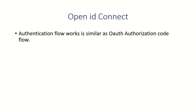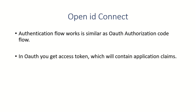In OAuth 2.0 authorization code flow, the first request your application sends to the authorize endpoint has a response type value of 'code'. Whereas in OpenID Connect it will be 'code' and 'ID token'. In OAuth 2.0 your application gets an access token which has application claims, and that access token is used to access a protected API.